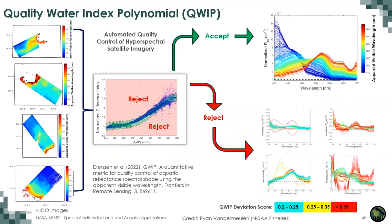The QWIP, or Quality Water Index Polynomial, is a quality control index developed for the AVW that can be rapidly implemented into ocean color processing chains, providing a level of uncertainty about a retrieved spectrum and flagging questionable or unusual spectra for further analysis. HICO images were quickly screened to identify pixels conforming to in-situ based spectral behavior. We're not going to go into much detail about the AVW or QWIP today, but ARSET is planning a PACE dedicated webinar in the near future where we will go into much more details about both.